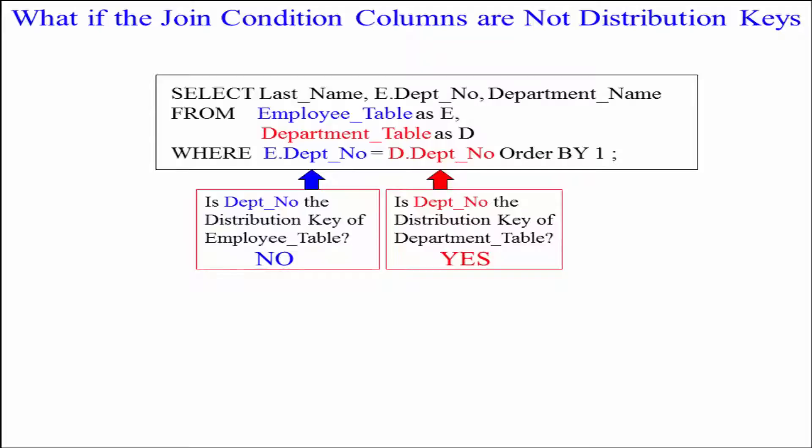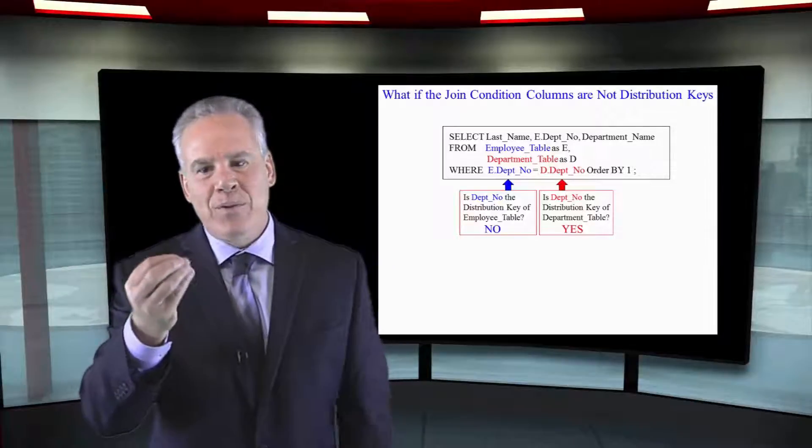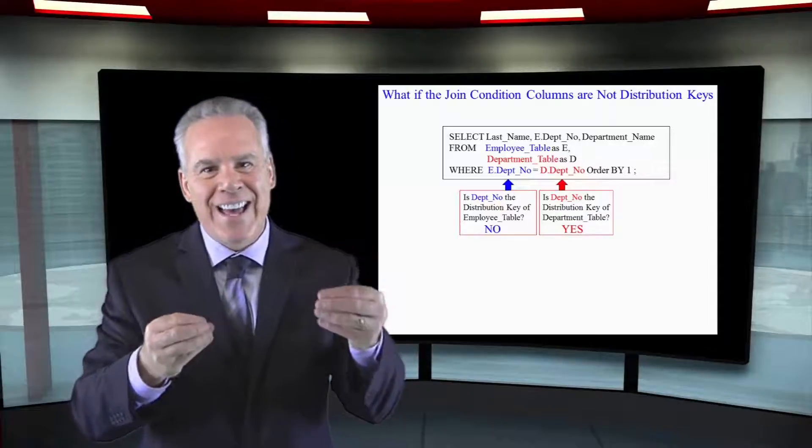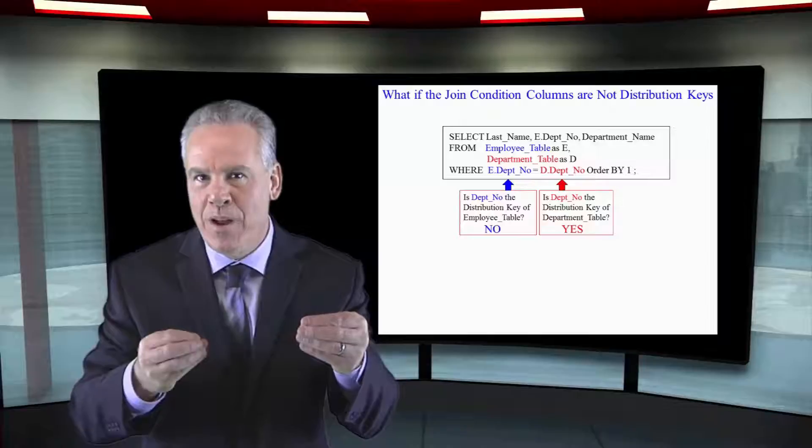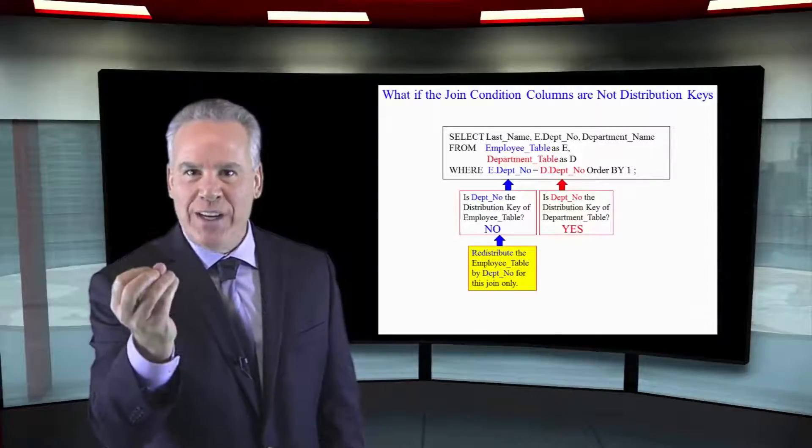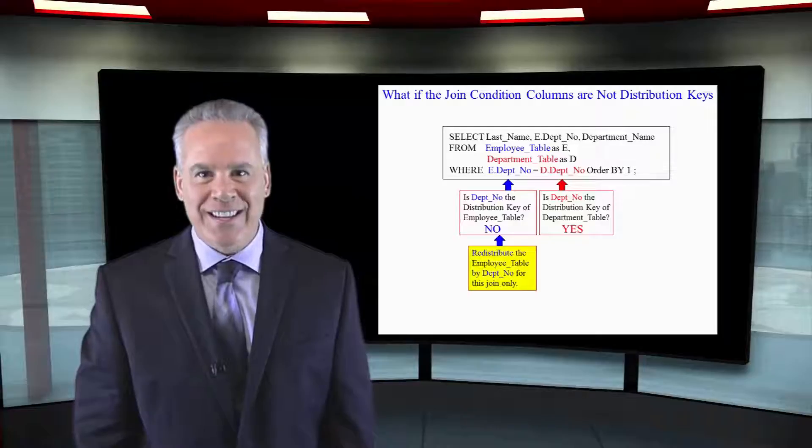But when we join on Depno and Depno, the Netezza optimizer says, oh, department table is distributed by Depno. Employee table is not. Let's redistribute the employee table by Depno and the matching stuff goes to the same SPU. That's why you'll see redistribute in the explain plans of Netezza.